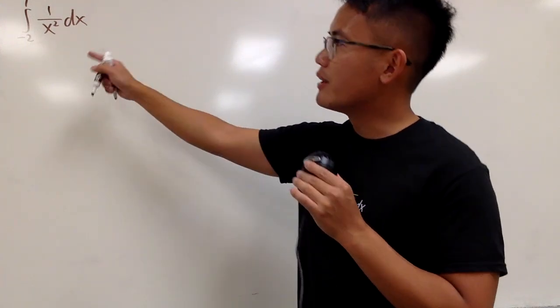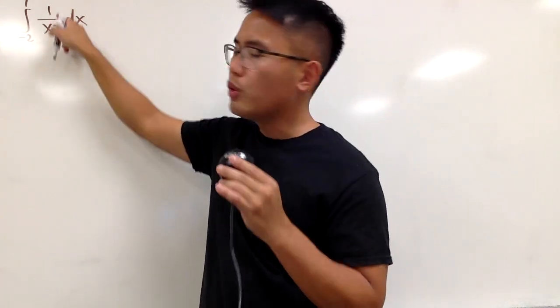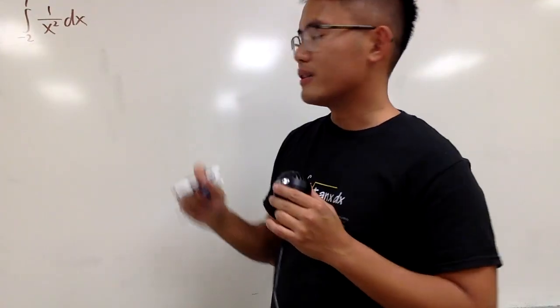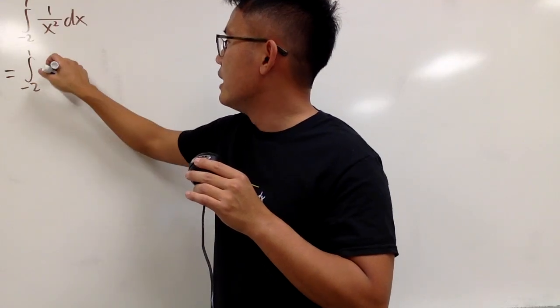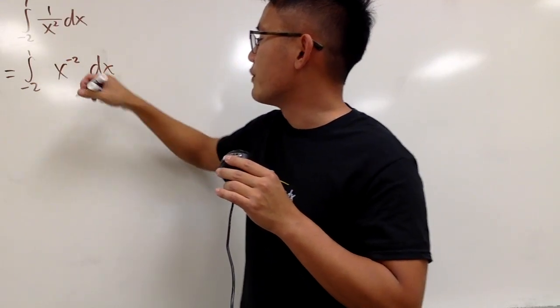Okay, let's do this integral right here. From negative 2 to 1 of 1 over x squared dx. This right here doesn't seem that bad, right? So let's see. This is the integral from negative 2 to 1. This is x to the negative 2, and you have the dx.